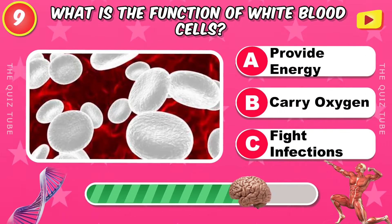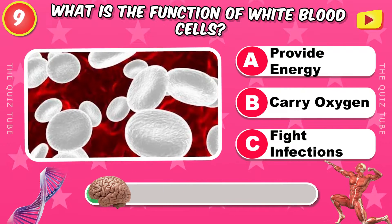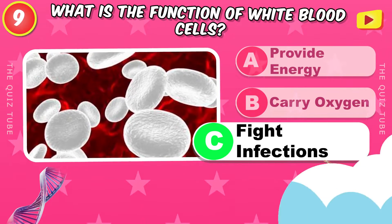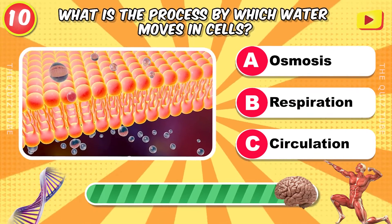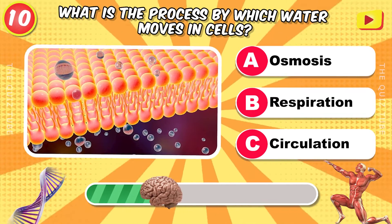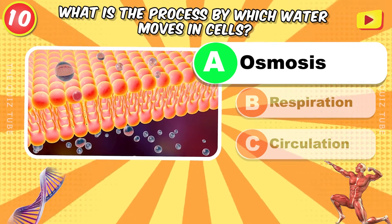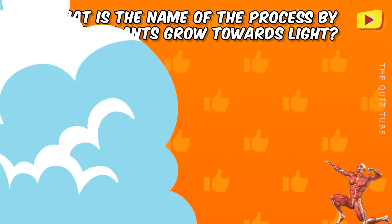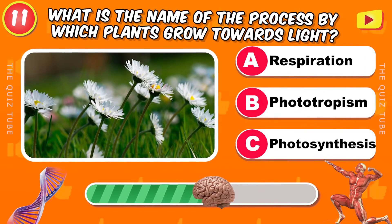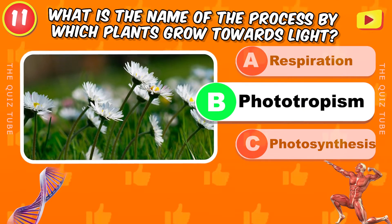What is the function of white blood cells? It's for fighting infections. What is the process by which water moves in cells? It's osmosis. What is the name of the process by which plants grow towards light? Phototropism.